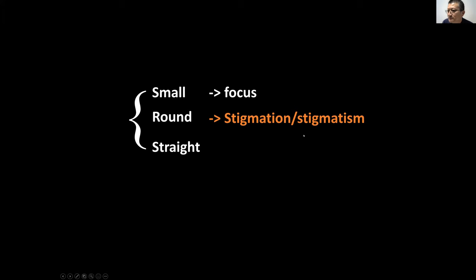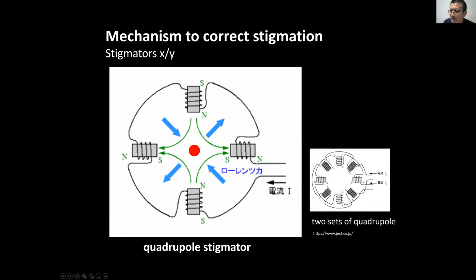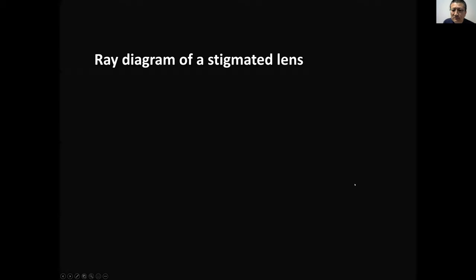This phenomenon is called astigmatism or stigmation. If the fields are not symmetrical — not perfect — we need to correct it. Inside the SEM column we have two sets of small stigmator magnets around the lens. When you have an imperfect oval beam, you apply X and Y corrections to squeeze the beam back into a perfect circular shape. Some SEMs have four sets of stigmators for finer control.